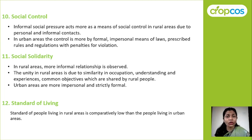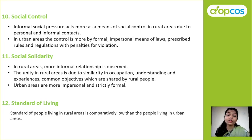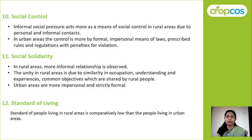Next is social solidarity — solidarity means bond of unity. In rural areas, informal relationship is observed; people are in close contact with each other, so unity is more. People carry out the same kind of occupation, face the same experiences, and have common objectives — that is why unity in rural areas is more. In urban areas, occupation and everything else is different, relationships are more impersonal and strictly formal, but solidarity or bond of unity is still stronger in rural areas.